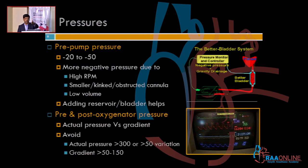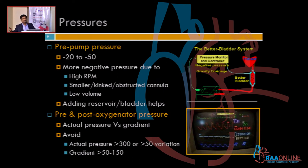Moving to pre and post oxygenator pressures: the oxygenator comes just after the pump. Between the pump and the oxygenator, pressure will be positive and very high. As blood passes through the oxygenator there is resistance and a pressure drop, so post-oxygenator pressure is slightly less. Pre-oxygenator pressure is usually around 150 to 200.